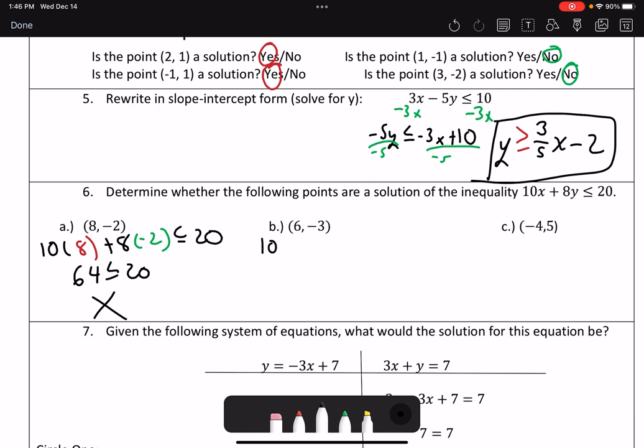Same thing here. I've got 10 times 6 plus 8 times negative 3. And I need to determine if that is less than or equal to 20. So that's 10 times 6 plus 8 times negative 3. That gives me 36. 36 is not less than or equal to 20, so that is not a solution.